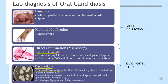KOH (potassium hydroxide) wet mount is done only on skin lesions, not oral lesions. For oral lesions, the swab is sent to the lab for PAS (periodic acid-Schiff) staining — a special stain that helps identify hyphae and spores. In this smear image, you can see the epithelial cell with hyphae and spores. The same swab can also be used to identify the organism by fungal culture using Sabouraud's dextrose agar medium.